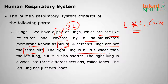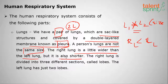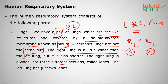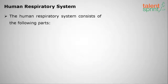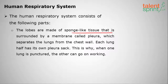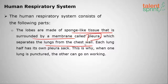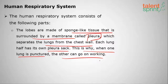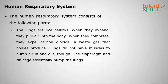The right lung is a little wider than the left lung but also shorter. The right lung is divided into three sections and the left lung into two sections; these sections are called lobes. The lobes are made of sponge-like tissue surrounded by the pleural membrane, which separates the lungs from the chest wall. Each lung has its own pleural sac, which is why if one lung is punctured, the other can continue working.